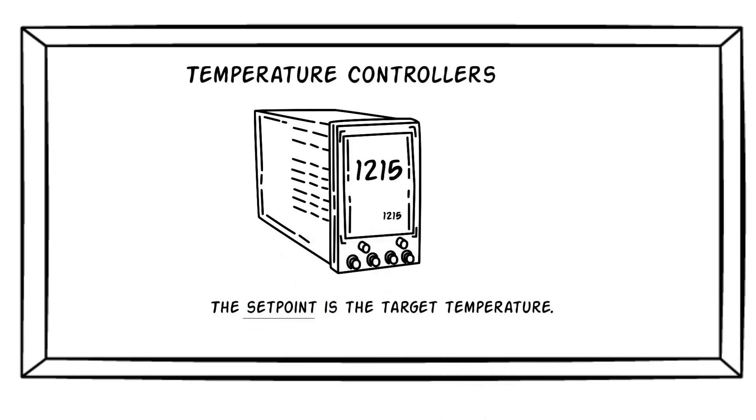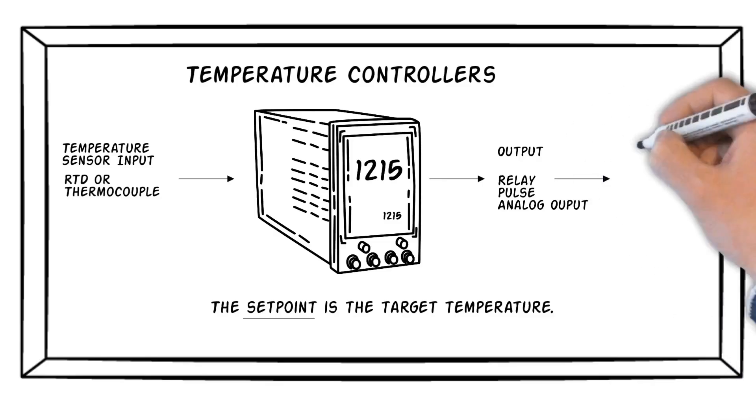For a temperature controller to function, it must have a temperature sensor input. And the most common types of industrial temperature sensors are RTDs and thermocouples. A controller must also have at least one output. The output may be a relay, a pulse output, or an analog output. The output is connected to a control device such as a heater, fan, or valve.